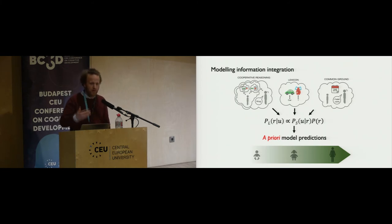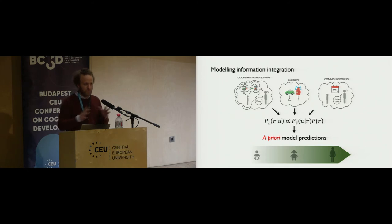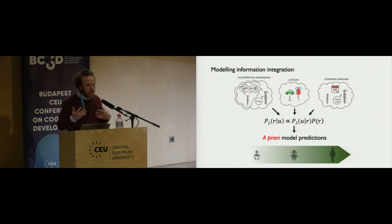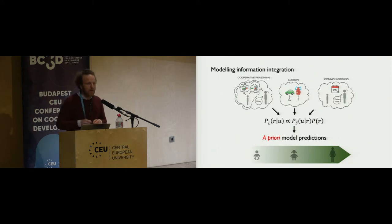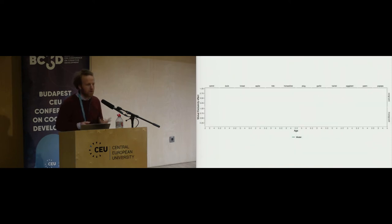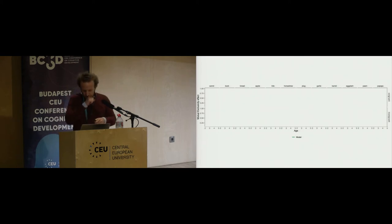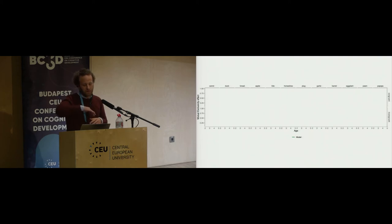I want to stress that we generated a priori model predictions, to counter the criticism that if you have a model you can always make it fit the data. We generated predictions ahead of time, then compared them to data we actually collected for these combinations of information sources. The model also generates quantitative, developmentally sensitive predictions. For each item and condition, we generated a developmental trajectory of the object children should choose depending on their age, the object, and the condition.